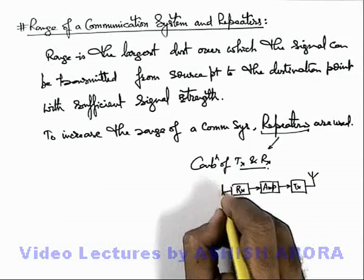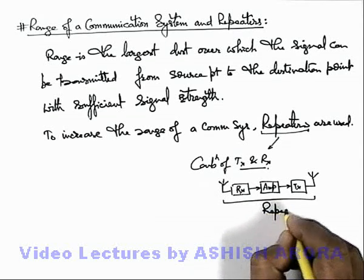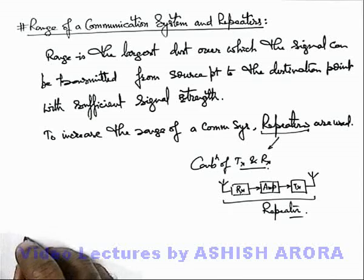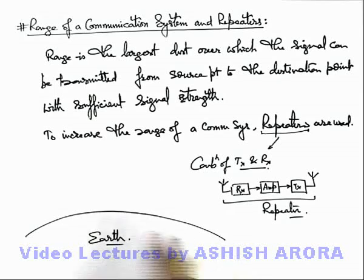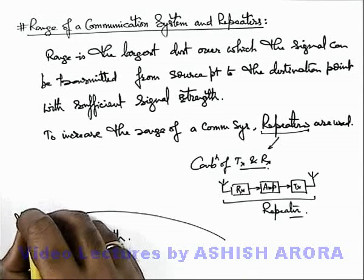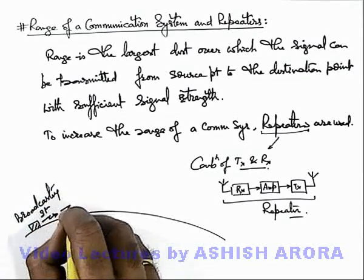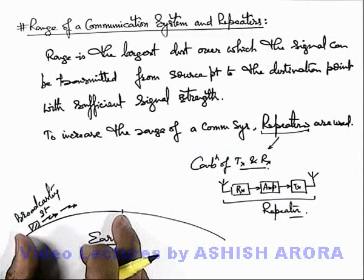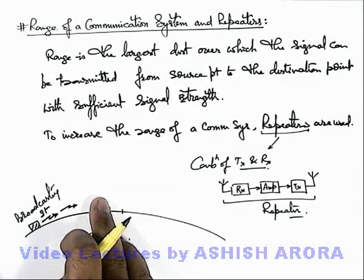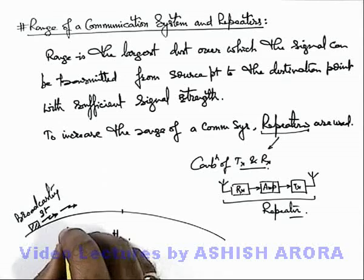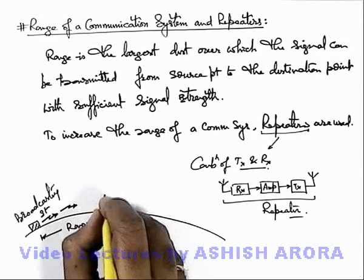If wireless communication is used, we use antennas. Here I am just taking an example of a typical repeater. Pictorially, we can understand: if this is a long distance over the earth where earth's curvature cannot be neglected, and there is a broadcasting station through which the signal is broadcasted, this is the maximum range up to which the signal reaches, because due to spreading over the atmosphere the signal strength decreases. So before the range, say if this is the range of this broadcast.